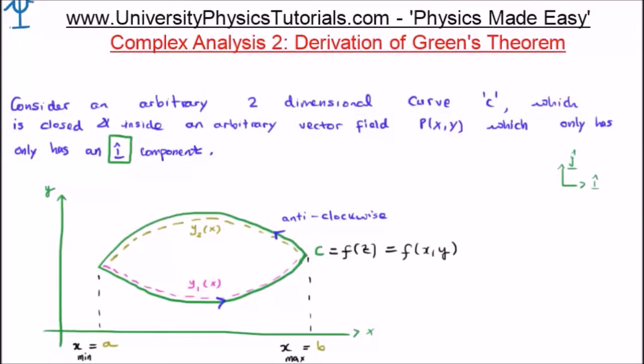Let's consider an arbitrary two-dimensional curve and I'm going to call this particular curve C. This is going to be closed and it's going to be inside an arbitrary vector field. I'm going to just call the vector field P and it's going to be a function of both X and Y. Well it could be a function of both X and Y but at the moment what we're going to do is just consider the X component or the I-hat component of the vector field P. So we have a two-dimensional curve C inside an arbitrary vector field which only has an I-hat component. And I've sketched this here on the plane at the bottom left of your screen.